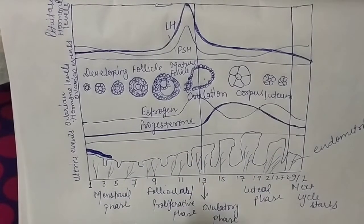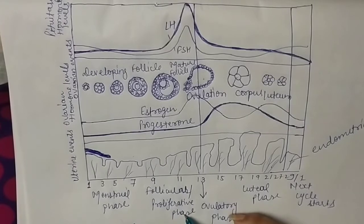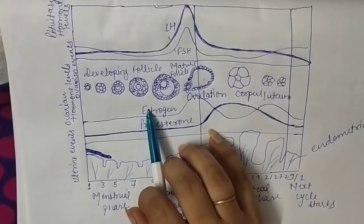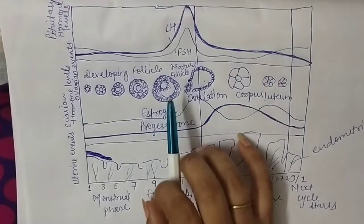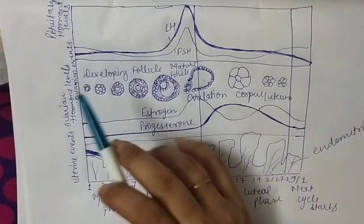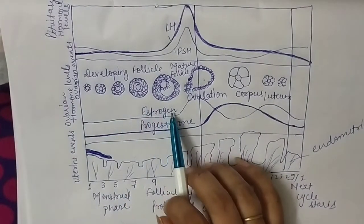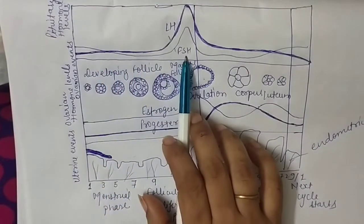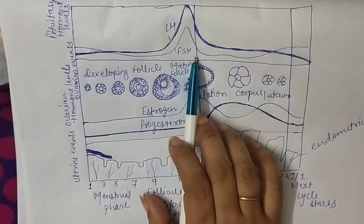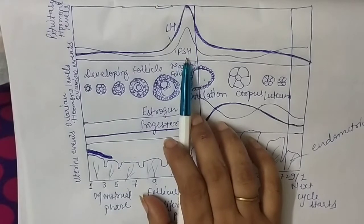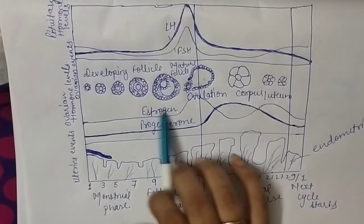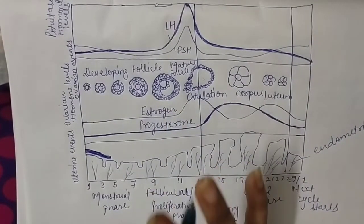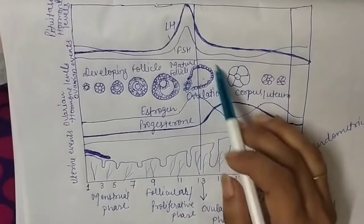When the menstrual phase ends, the follicular phase or proliferative phase starts. In this duration, the immature ova, the follicle, starts to develop. You should know which follicles are formed: primary follicle, secondary follicle, tertiary follicle, and finally Graafian follicle. During this time, FSH (follicle stimulating hormone) level is high, stimulating follicle development and converting immature ova to mature ova. By the thirteenth day, the secondary oocyte or ova is fully mature.